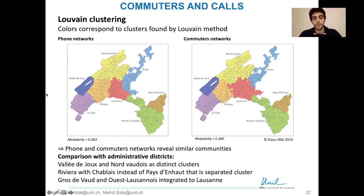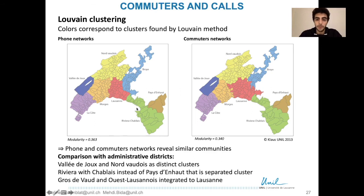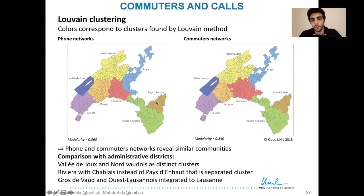In comparison with administrative districts, we see that the Vallejoux and Norveudois form two distinct clusters, whereas they are only one administrative district. There is also a notable reconfiguration on the side of the Riviera and Chablis, where Riviera Chablis is composed of half a district of Riviera Pays d'Or, and that half is integrated with Chablis, which is normally the district of Aigle.